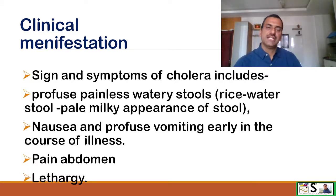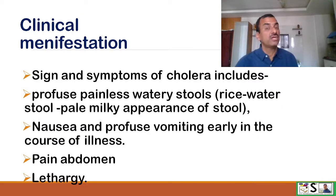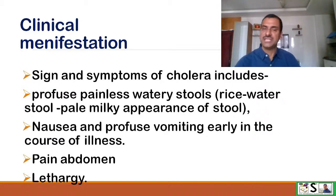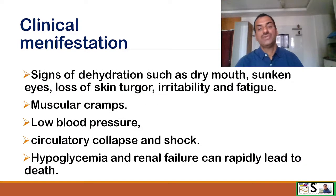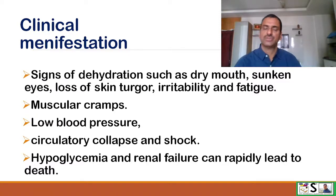Along with diarrhea, there may be nausea and profuse vomiting early in the course of illness. At this time, it is very difficult to control dehydration because the patient is not tolerating ORS. Pain in the abdomen will also be there. The patient will be lethargic, with signs of dehydration such as dry mouth, sunken eyes, loss of skin turgor, irritability, and fatigue.